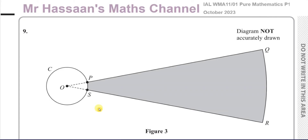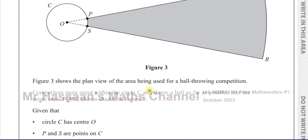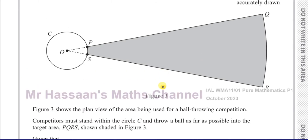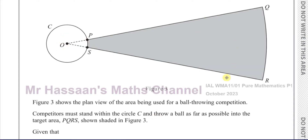This question is about radian measure, and here we're told about the planned view of an area being used for a ball throwing competition. Competitors must stand within the circle C and throw a ball as far as possible into the target area shown shaded in figure three.